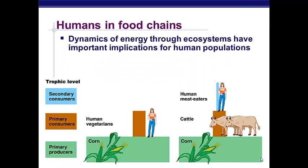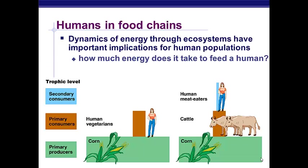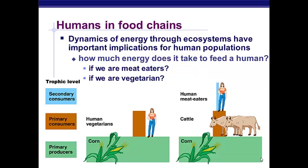It's very interesting to look at human interaction with the food chain. Most humans are omnivores — we eat both plants and meat — but some choose to be vegetarians. If a human is a meat eater, it takes more energy to feed that human because there's less energy available at the level at which they're eating. If the human is a vegetarian, they're eating lower on the food chain, so it takes less energy to feed that human.